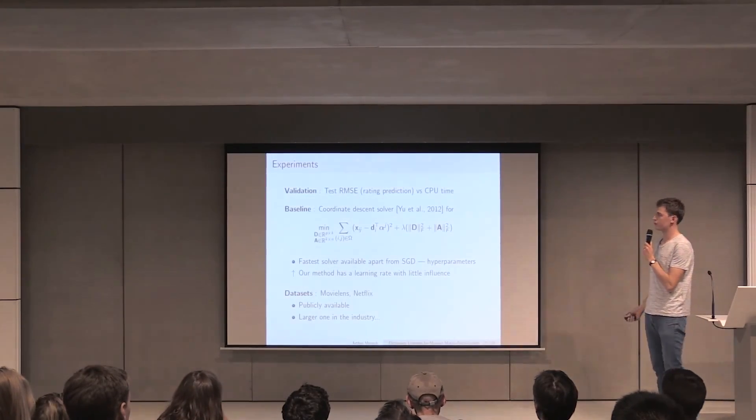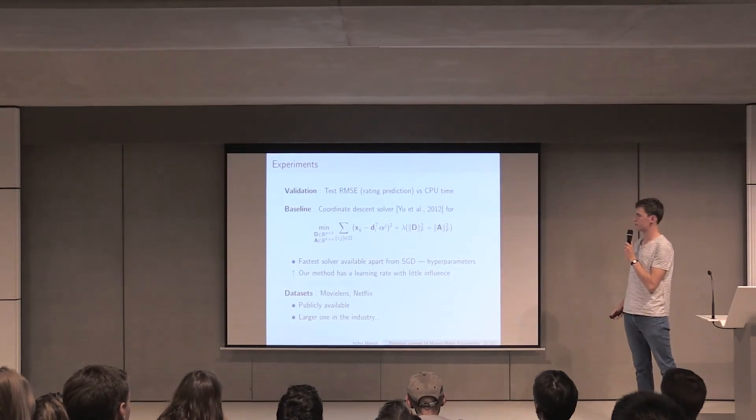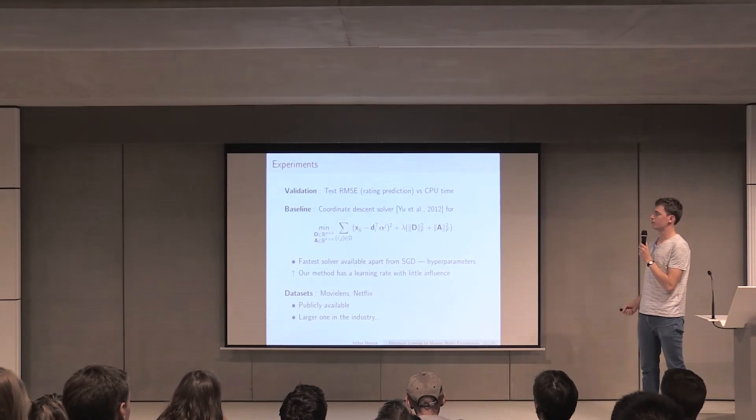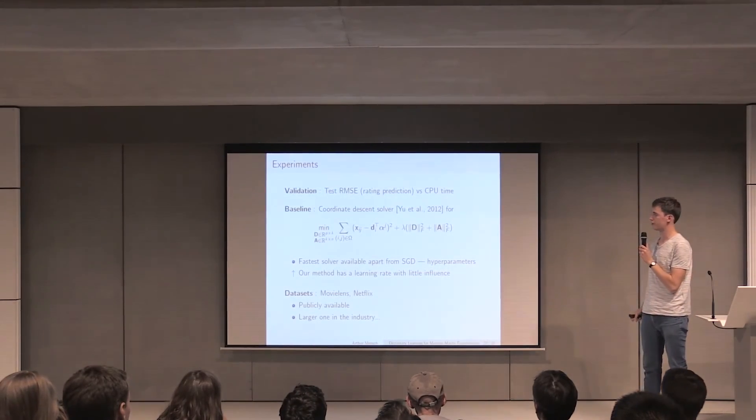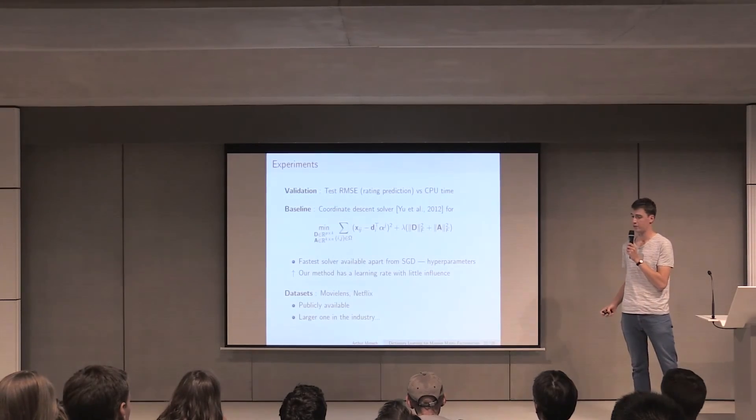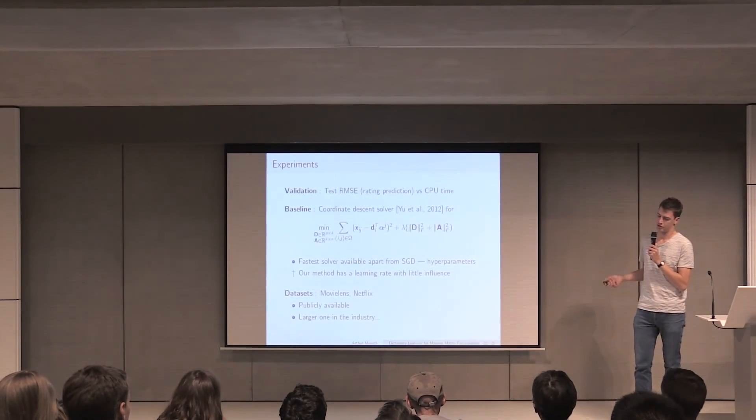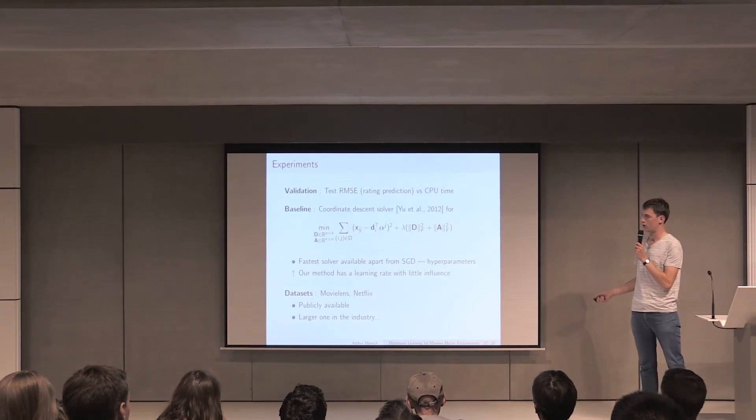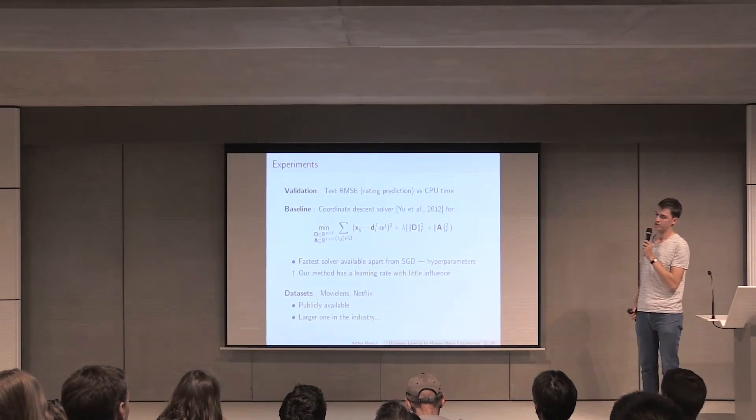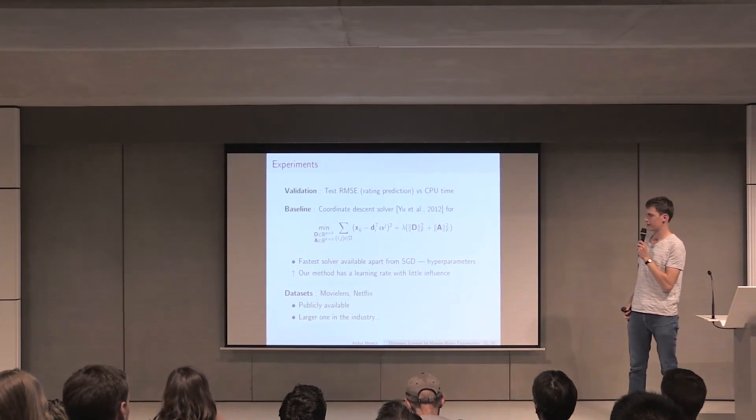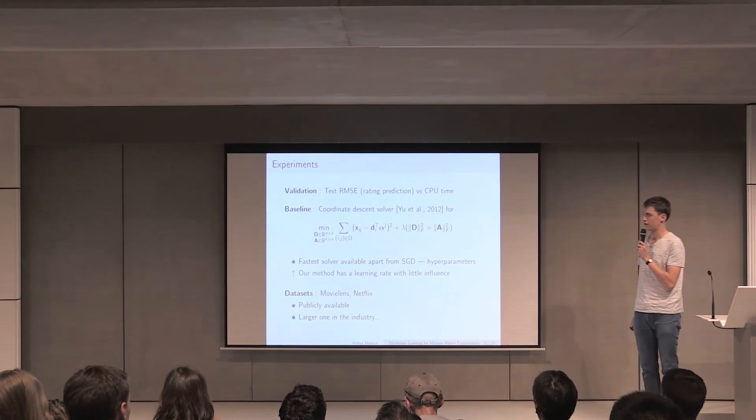We had some pretty good results on this, at least a proof of concept on collaborative filtering. The validation we proposed is classical, we used test root mean squared error versus CPU time, just to show that we are actually faster than our baseline, which is a coordinate descent solver, which we selected because it had no hyperparameters to set, and which is pretty fast in practice.